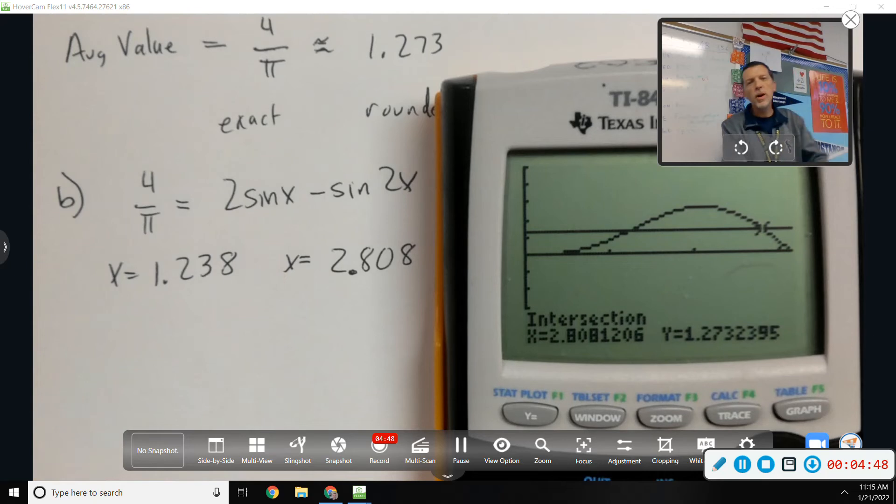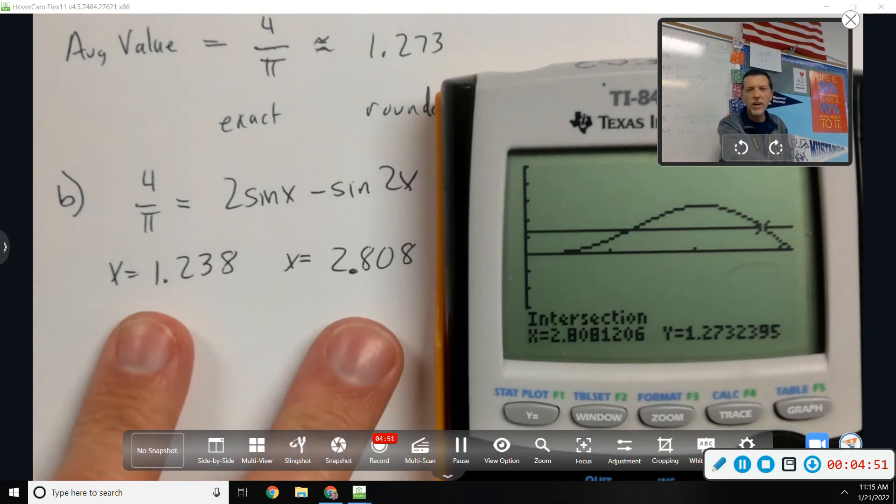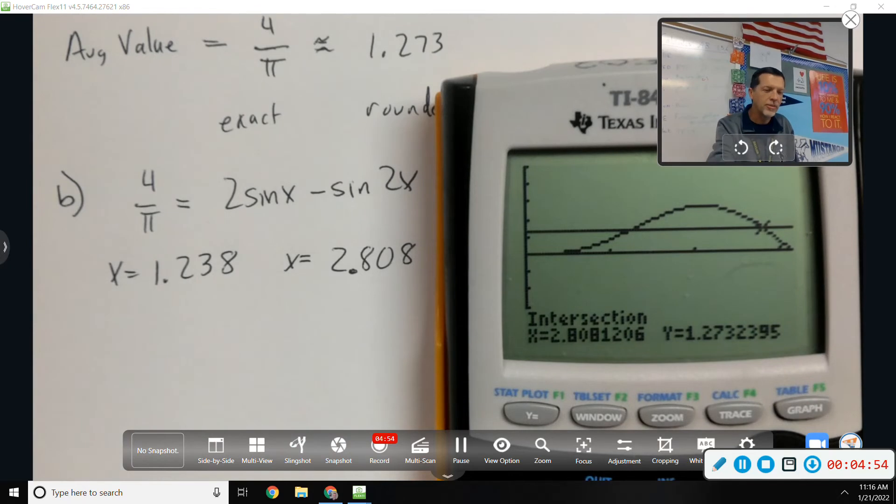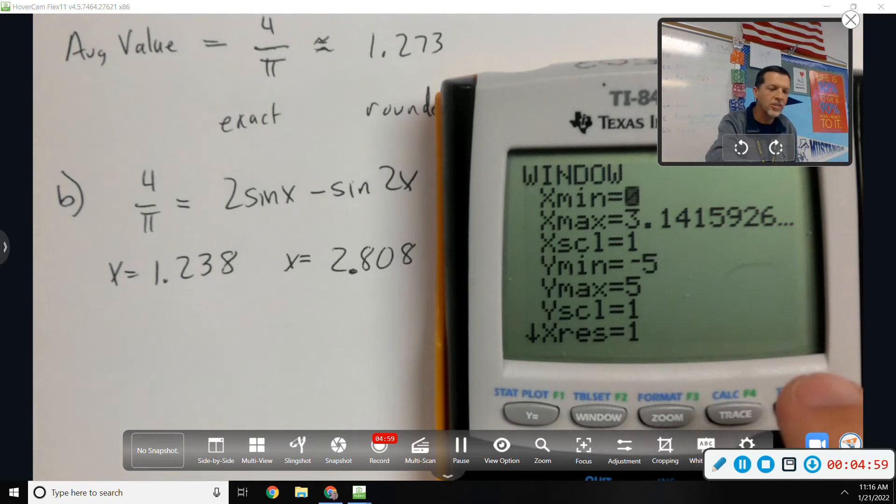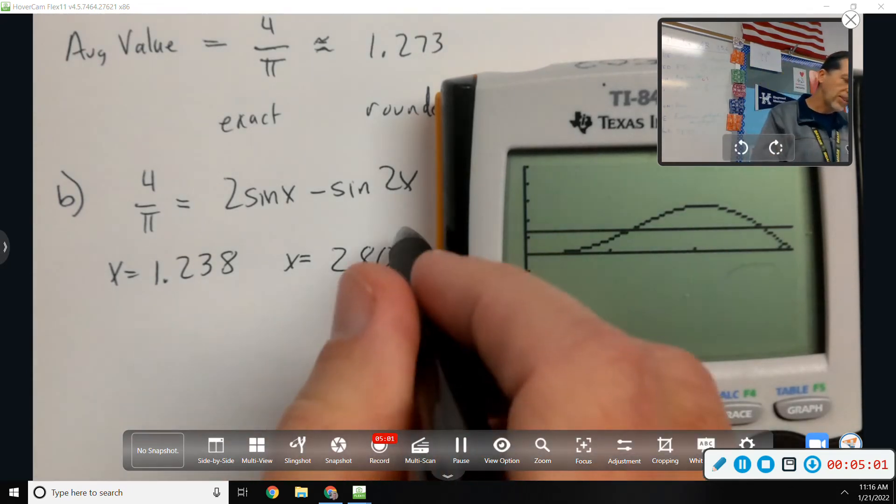I should probably double check to make sure those are both between zero and pi. They are, but I sort of guaranteed that from the get-go when I only looked from zero to pi. So, whatever answers I got would be on the window, that's okay.